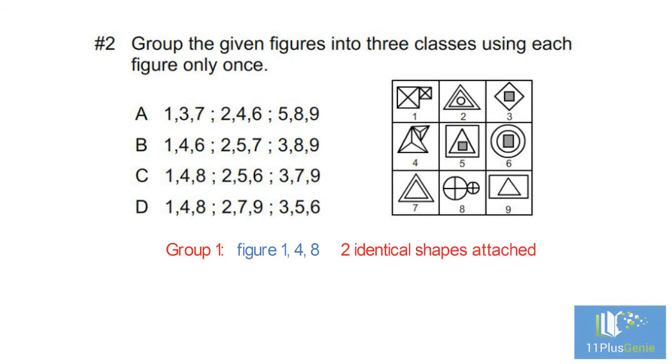In figure two, we have three shapes inside each other, of which two are the same and the third shape is different. This same arrangement is in figures five and six. Group two is figures two, five, and six. Group three is figures three, seven, and nine. They each contain two shapes inside of each other.